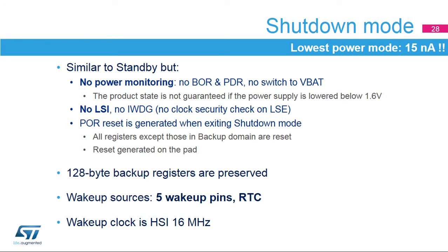The shutdown mode is the lowest power mode of the STM32G4 with only 15 nanoamps at 1.8 volt. This mode is similar to standby mode, but without any power monitoring. The power down reset is disabled, and the switch to VBAT is not supported in shutdown mode. Hence, the product state is not guaranteed in case the power supply is lowered below 1.6 volt. The LSI is not available and consequently the independent watchdog is also not available. A power reset is generated when the device exits shutdown mode. All registers are reset except those in the backup domain, and a reset signal is generated on the pad.